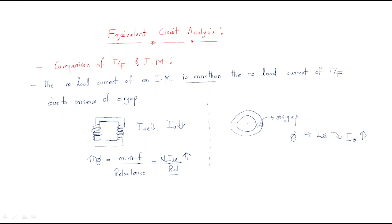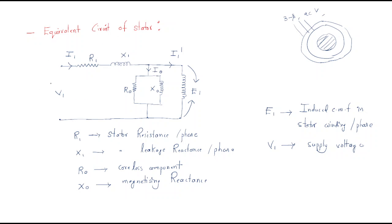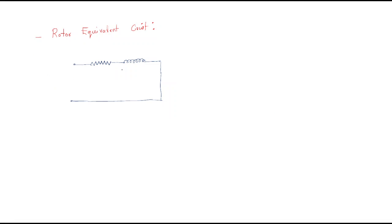In the last session we discussed the comparison between the transformer and induction motor - we compare in order to make analysis easy and to draw the phasor diagram. We already drawn the equivalent circuit of the stator, which is supplied by supply V1 and consists of resistance R1, stator reactance X1, a no-load branch with core loss component and magnetizing leakage reactance, and the induced EMF in the primary winding.